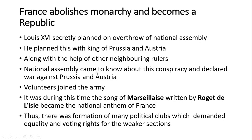Louis XVI took help from Austria because his wife was a princess from Austria. When the National Assembly came to know about this conspiracy, it declared war against Prussia and Austria, and Louis XVI failed in his plan. Volunteers joined the army. It was during this time that the song 'La Marseillaise' was written by Roget d'Islay, and it became the national anthem of France.